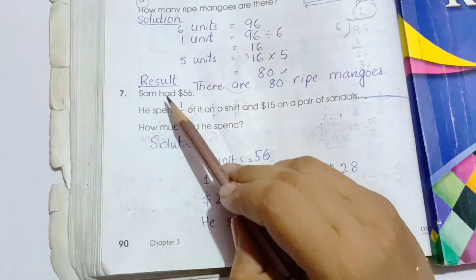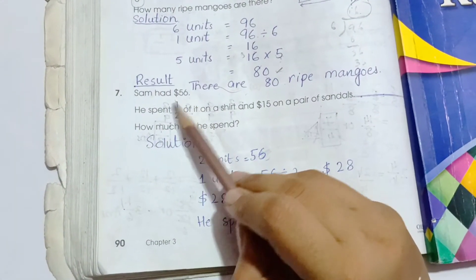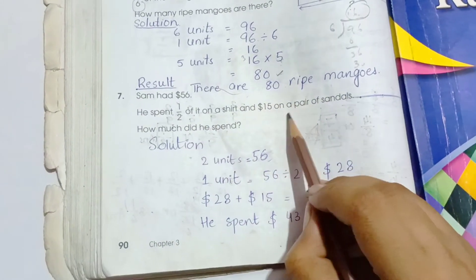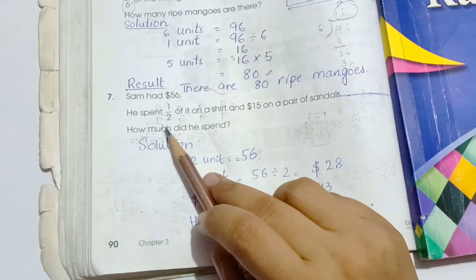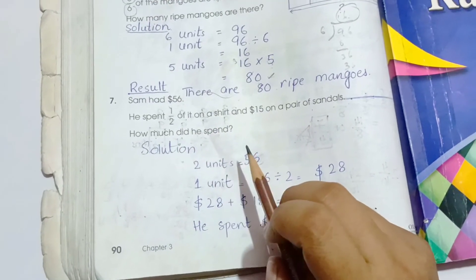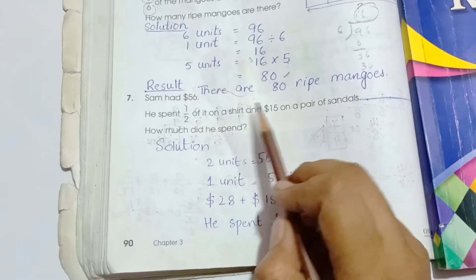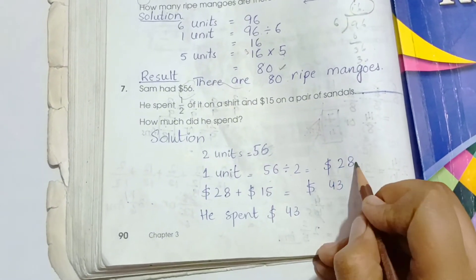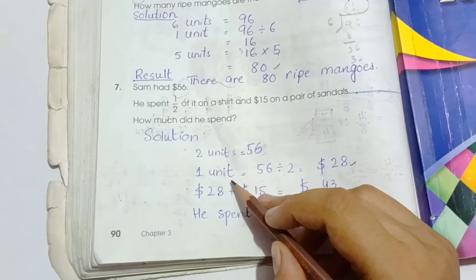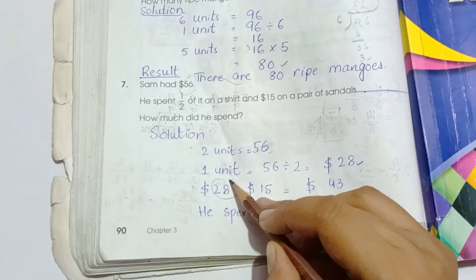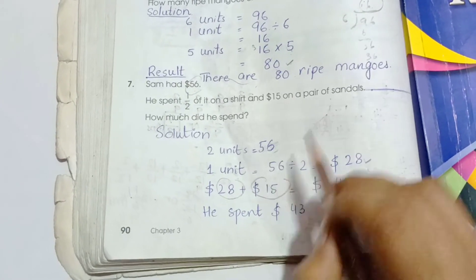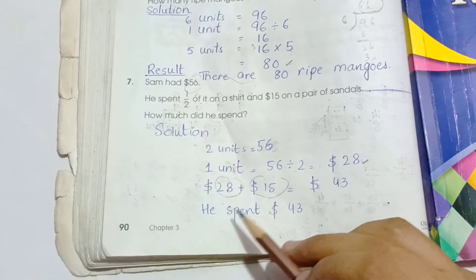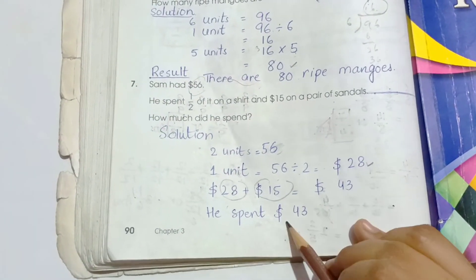Number 7: Sam had 56 dollars. He spent 1 upon 2 of it on a shirt and 15 dollars on a pair of sandals. How much did he spend? First we find 1 upon 2 of 56: that is 28. Now we add 28 plus 15 which is 43. So Sam spent 43 dollars.